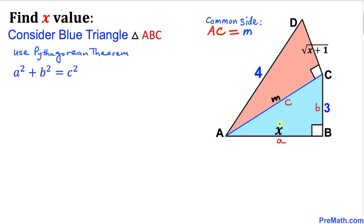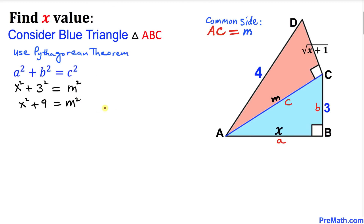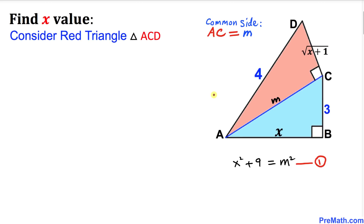Now let's fill in the blanks. In our case, a is x, so we put x². b is 3, so we put 3². c is m, so we put m². Simplifying: x² + 9 = m². Let's call this equation number one.